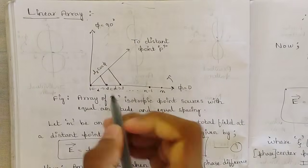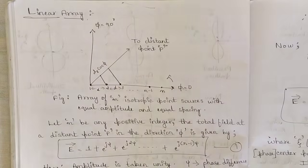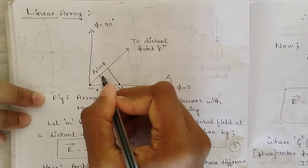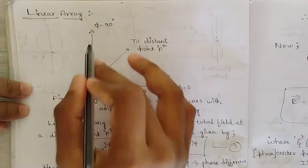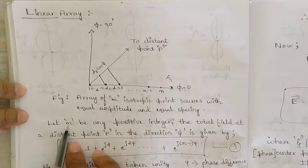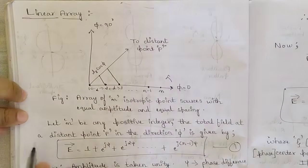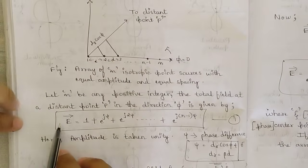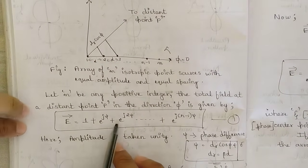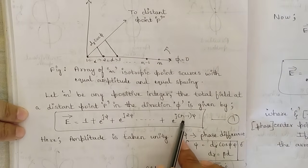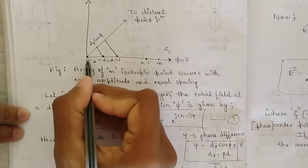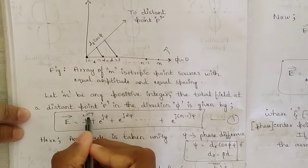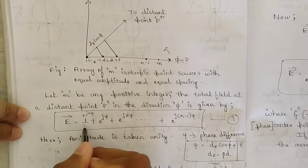There are n isotropic point sources, with no one definite count. The field is generated to a distant point P and is given by dr·cos(φ). The angle φ varies from 0 to 90 degrees in this plane. Let n be any positive integer; the total field at the distant point P in the direction φ is given by: E = 1 + e^(jψ) + e^(j2ψ) + ... + e^(j(n−1)ψ) — call this equation 1. The first term is 1 because the point source at the origin gives e^(j·0·ψ) = e^0 = 1.